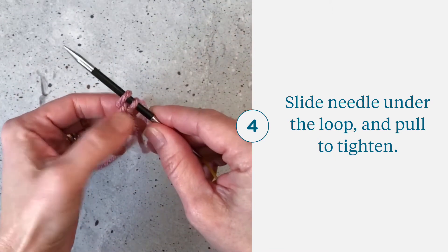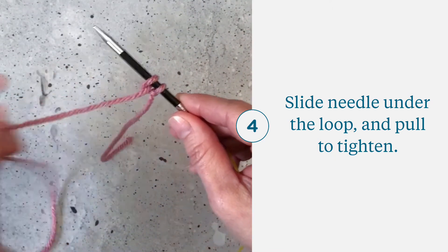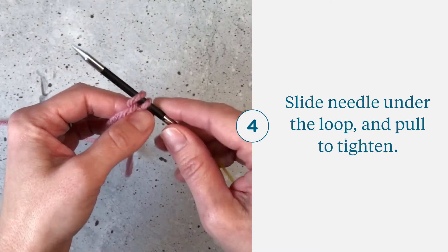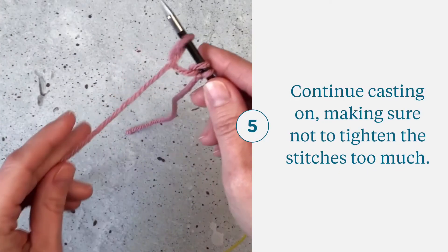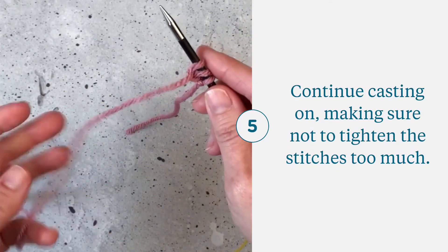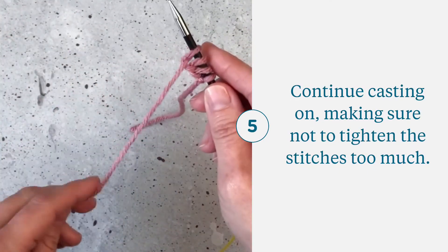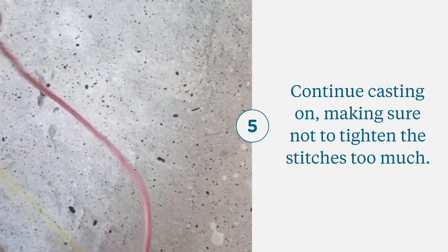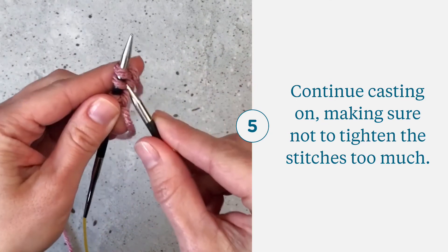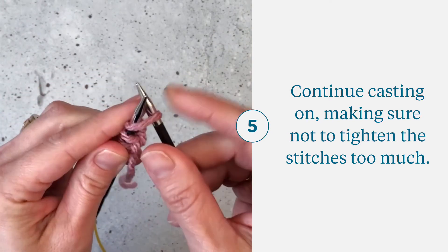Slip knot counts as one stitch. The one I just added is two. The only thing I would say is be sure not to pull too tightly because when you are done, you want to be able to put your needle in there and knit.